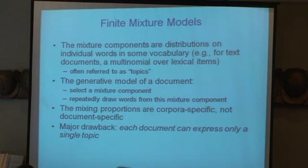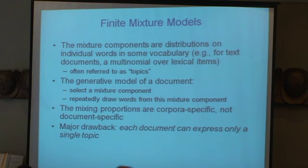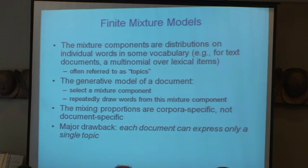So what's a document model? I have a document, a collection of words, and I need a probability distribution on those words. If I just have one distribution, that's called a finite mixture model — I select among several choices for the document. That was done about 20 years ago, and it gave kind of crummy document models — you could only have one topic in a document. The document could only be about one thing, so that's not very interesting.